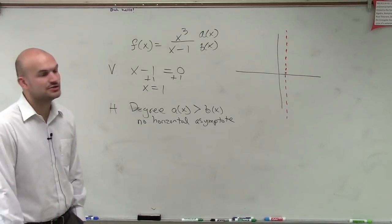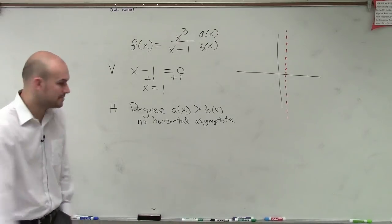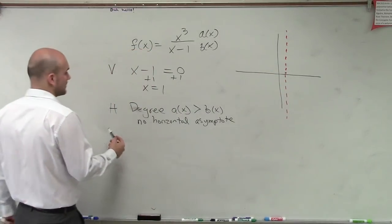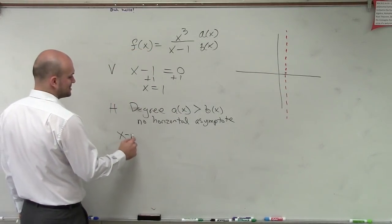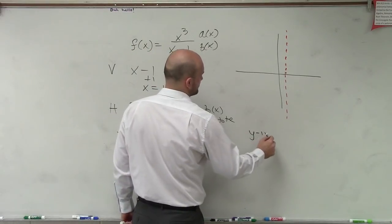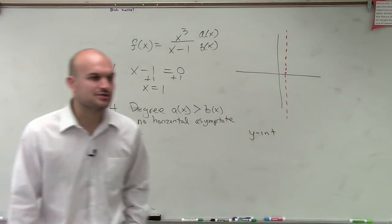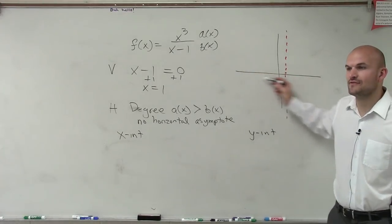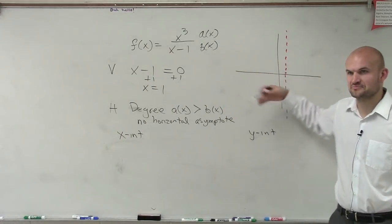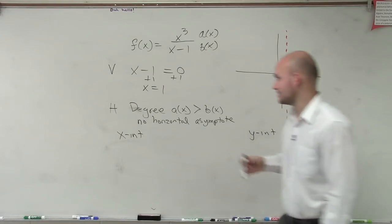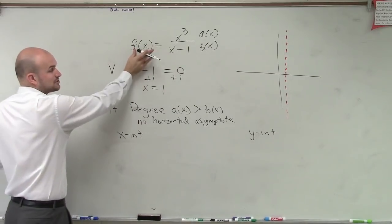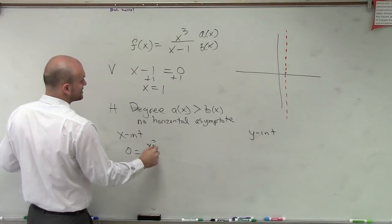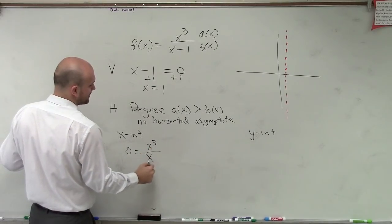Now we need to determine our x and y intercepts, because they're asking us to graph this. To find the x intercept, we set the y value equal to 0. So we take f(x), which is our y value, and set that equal to 0: 0 equals x cubed divided by x minus 1.